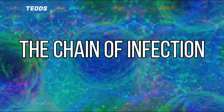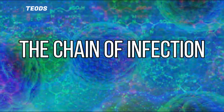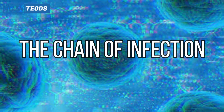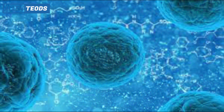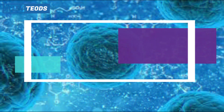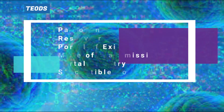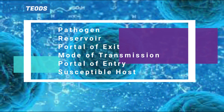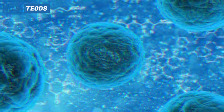Now let's talk about the chain of infection, the continuation of the topic. There are six links in the chain of infection: number one, pathogen; number two, reservoir; number three, portal of exit; number four, mode of transmission; number five, portal of entry; and number six, susceptible host.